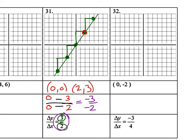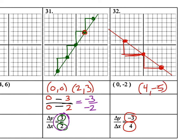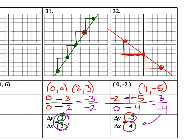Number thirty-two is like the last one — it gives us a point and a slope. We start at zero, negative two, and the slope shows down three and to the right four. Going down three and to the right four gives the next point, and we duplicate the stair step in the other direction too. Using the points zero, negative two and four, negative five in the formula: negative two minus negative five is negative two plus five — that's three. And zero minus four is negative four. So three over negative four is the slope, matching what was given.